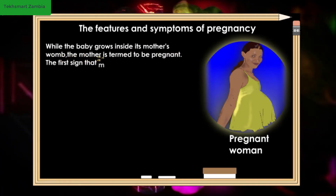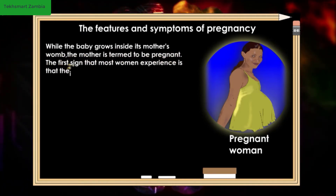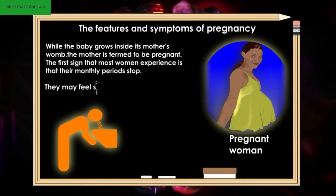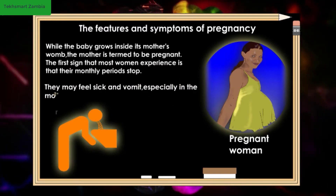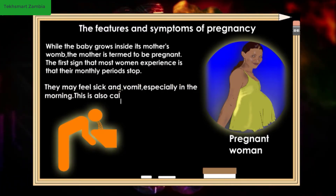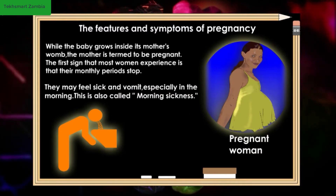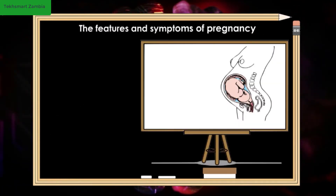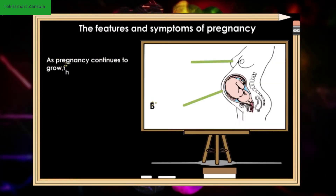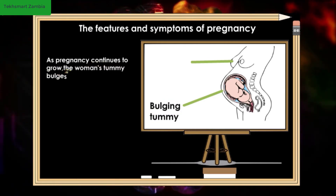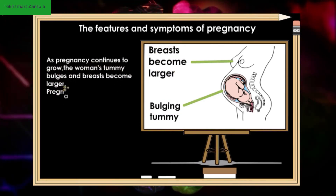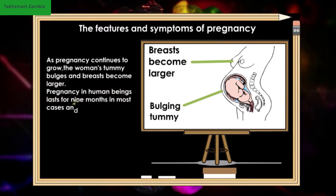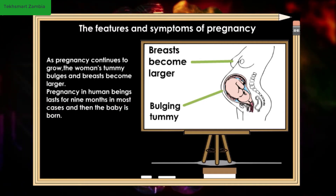The first sign that most women experience is that their monthly periods stop. They may feel sick and vomit, especially in the morning — this is also called morning sickness. As the pregnancy continues to grow, the woman's tummy bulges and breasts become larger. Pregnancy in human beings lasts for nine months in most cases, and then the baby is born.